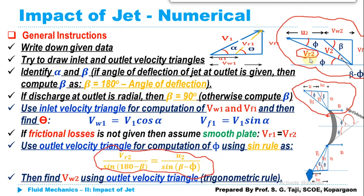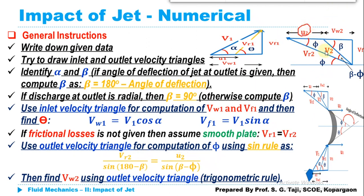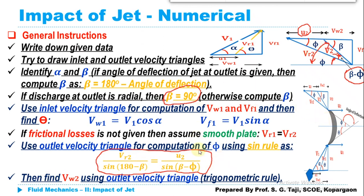Applying the sine rule to the outlet velocity triangle: Vr2 / sin(180° − β) = u2 / sin(β − φ). This allows us to compute phi. If the discharge at the outlet is radial or beta = 90°, there is no need to use the sine rule — you can simply use trigonometry directly to calculate phi and then Vw2 from the outlet velocity triangle.